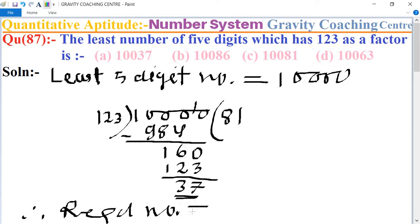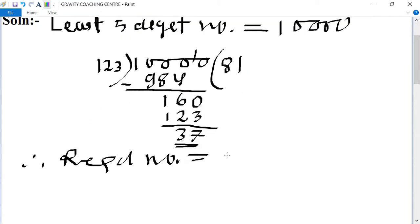So therefore, required number equals 10000 plus (123 minus 37).